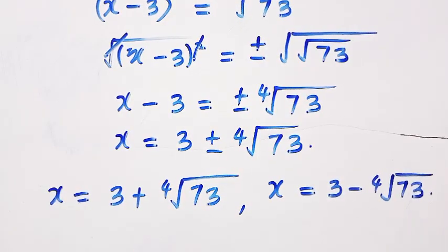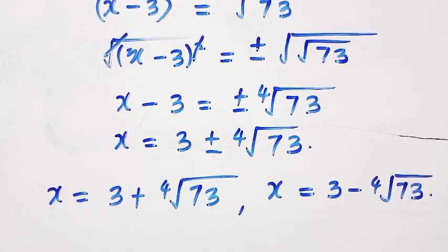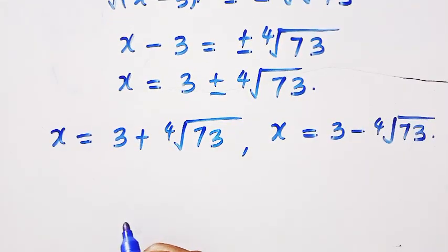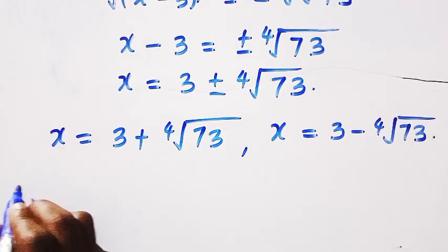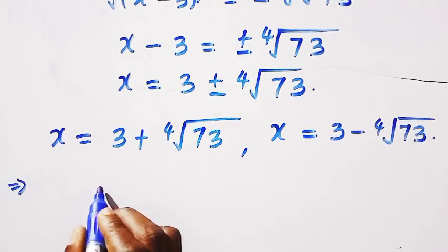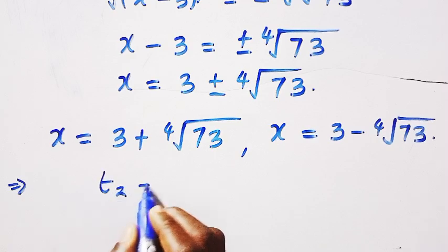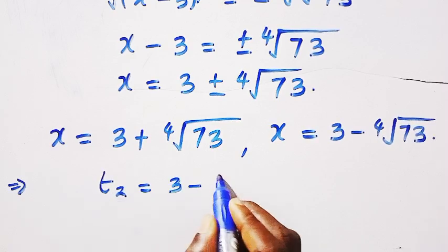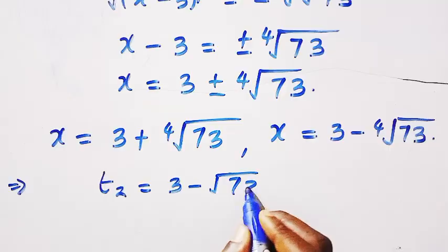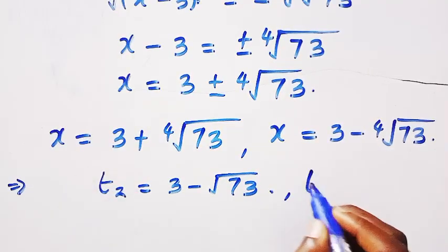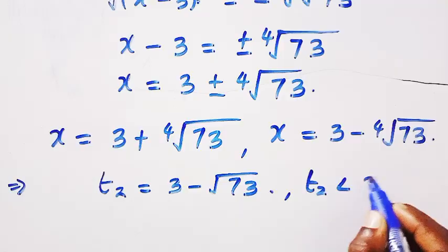Let's check the second one. In the second case, we test for when t equals 3 minus the square root of 73. So, this implies if f of x is given as, so we have t2 to be equals 3 minus the square root of 73. But looking at these values, so the t2 here is less than 3.